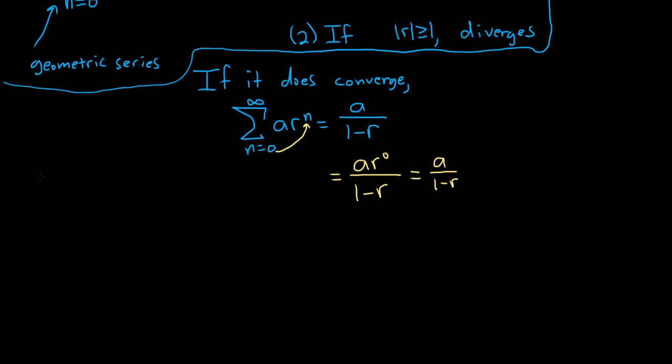So let's actually do an example right away. Let's say it's n equals 0 to infinity, 2 times 1 third to the n. In this case, you can see that r is equal to 1 over 3, and the absolute value of r is less than 1. So this converges by the GST.